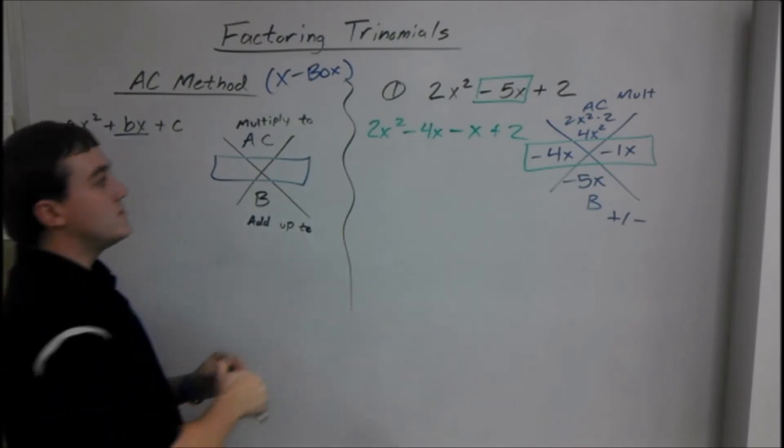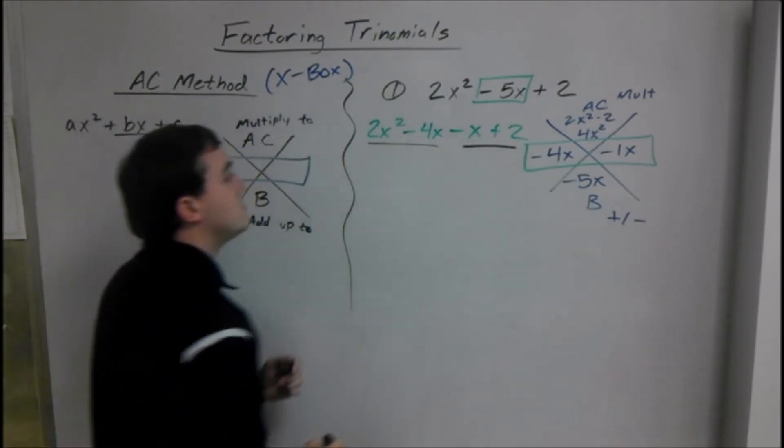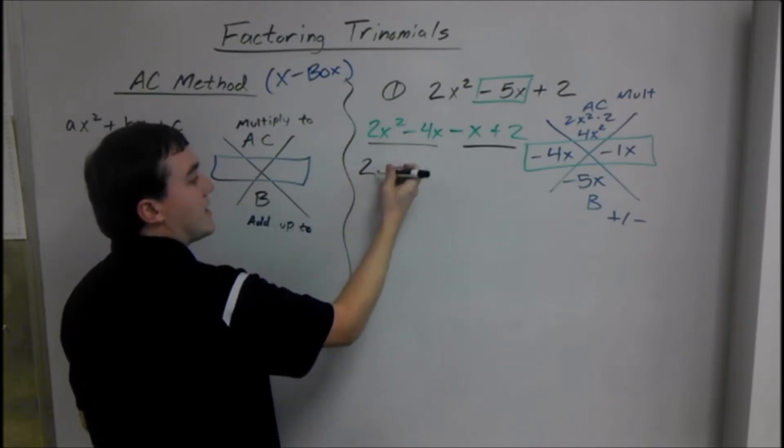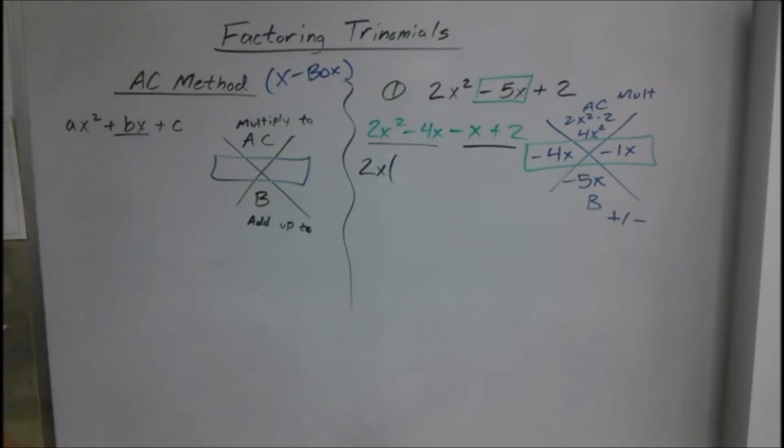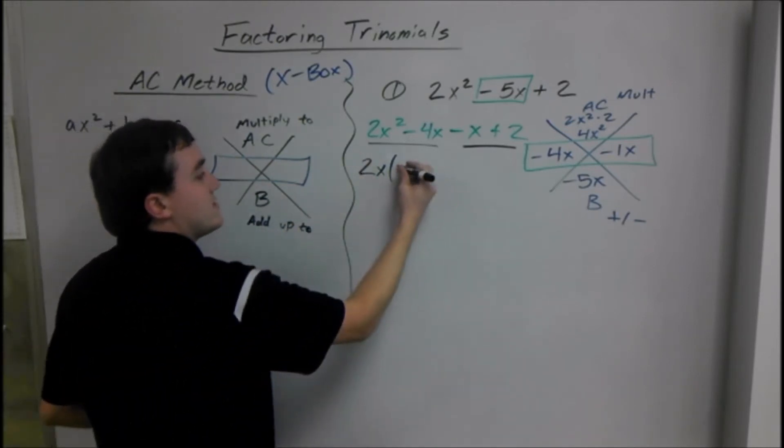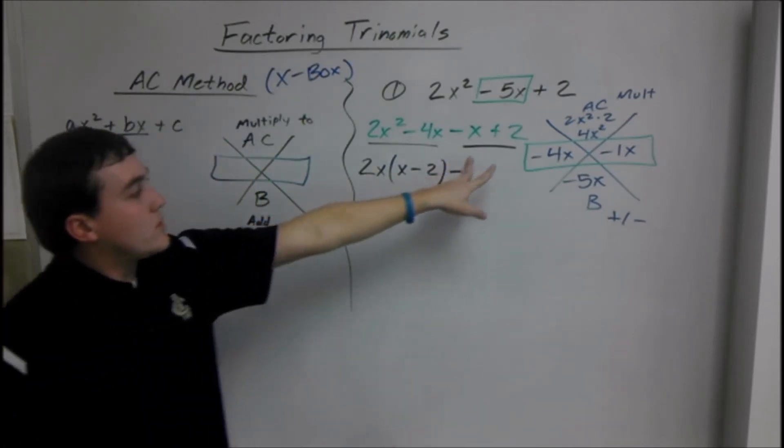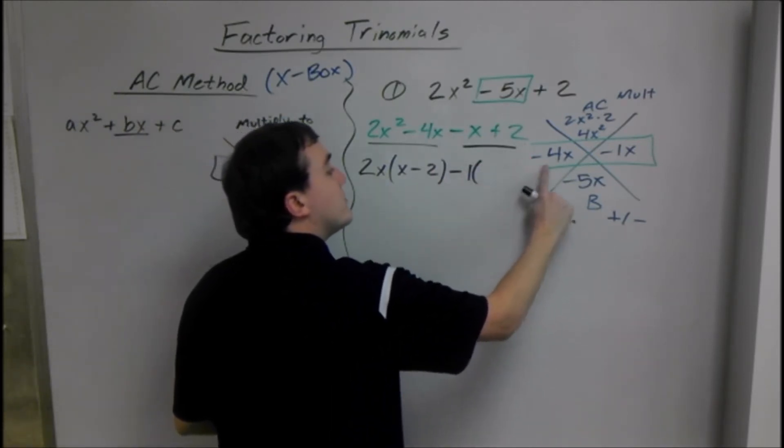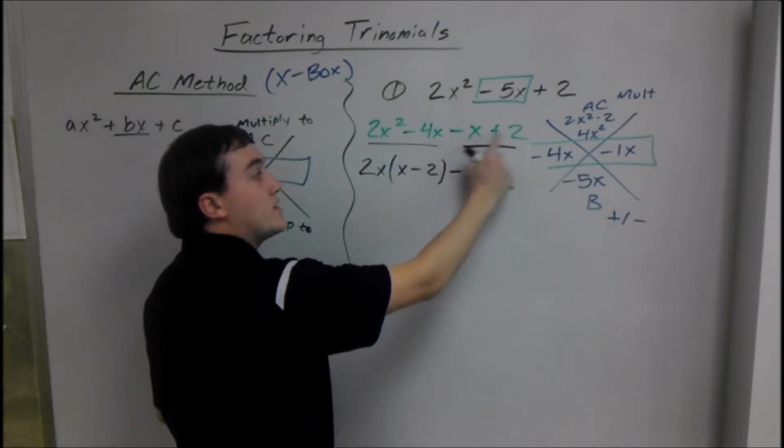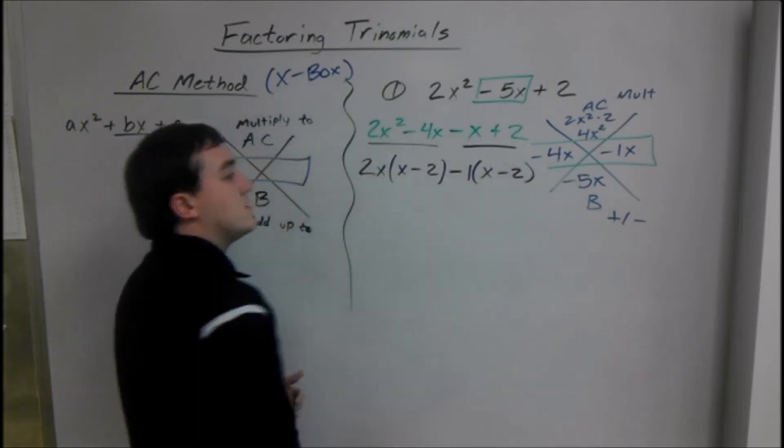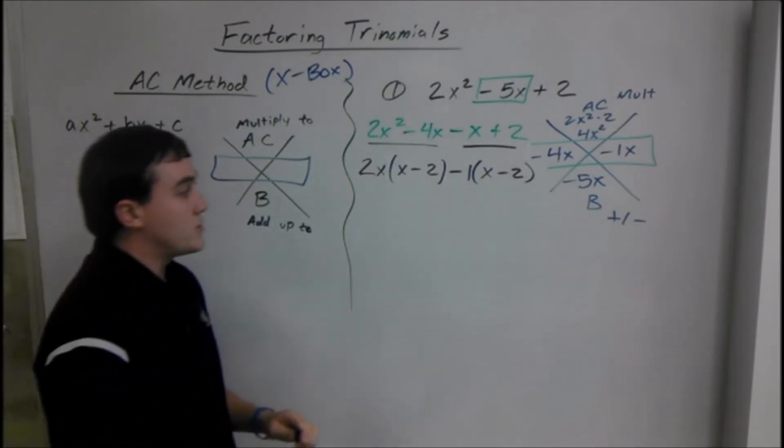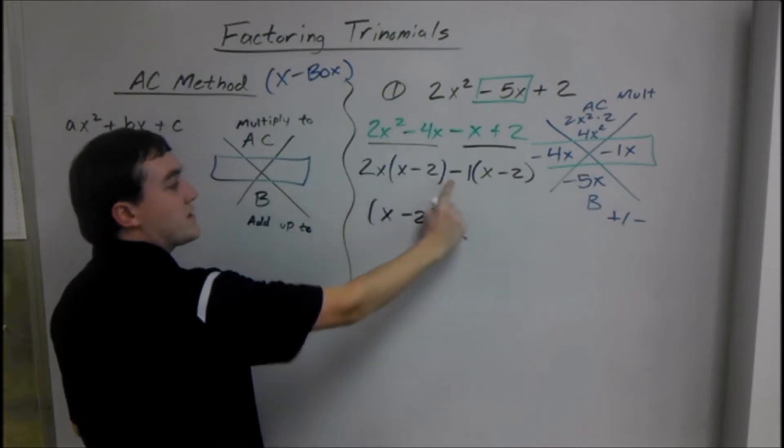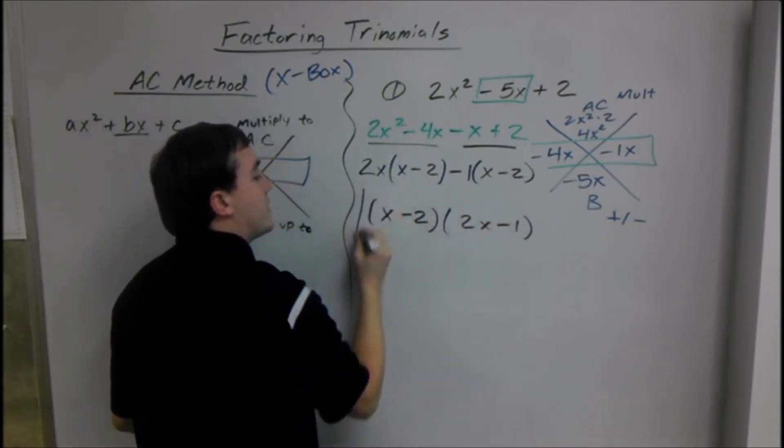Now we use factor by grouping. We group the first two and group the last two. We can take out a 2X. If we take out a 2X, we have X minus 2 left. Minus, we look at what we can take out here. We take out a 1. And we know this parenthesis and this parenthesis have to be the same. So if we take out a 1, this is going to give us X minus 2 as well. Then everything on the inside of the parenthesis goes in one, and everything on the outside, 2X minus 1, will go in the other.